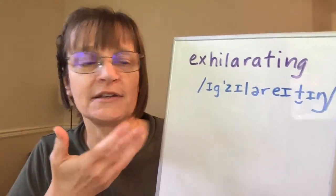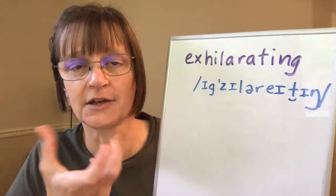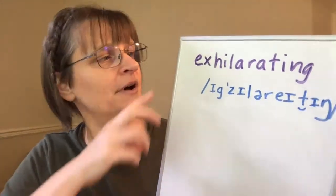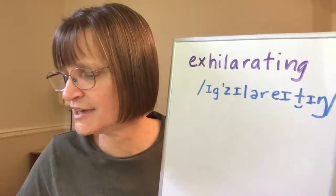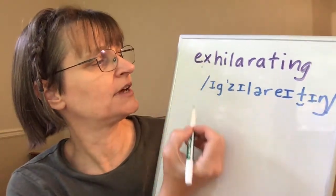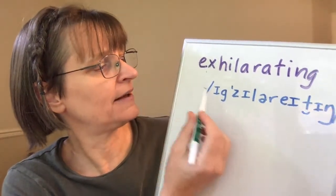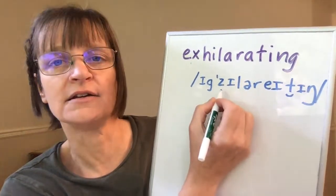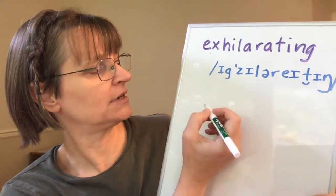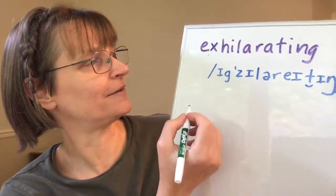In the word 'exhilarating,' one of the challenges right off the bat is the letters EX. I do have a video and a lesson on speechmodification.com about the different things that the letters EX can say. In this word, the letters EX are unstressed and short, and oftentimes when that's the case they will say the sounds IH, G, and Z. So sometimes in words like 'execute' or 'exit,' EX sounds like a G. In 'excite,' EX can also have voiceless KS sounds.